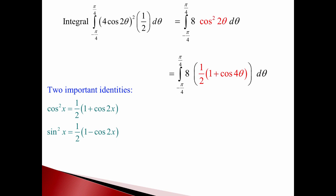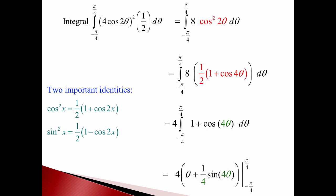The ½ and the 8 simplify down to just 4. Now I've got a really easy substitution integral from Calculus 1. When I integrate 1, I get θ. When I integrate cos(4θ), that's a substitution integral and I get ¼sin(4θ). Substituting in π/4 and negative π/4, the whole thing turns out to be just 2π. Not terribly difficult, but also not something usually covered in Calculus 1 — so that's why this kind of integral is actually fair game on the exam.